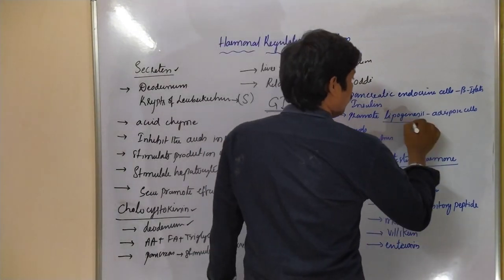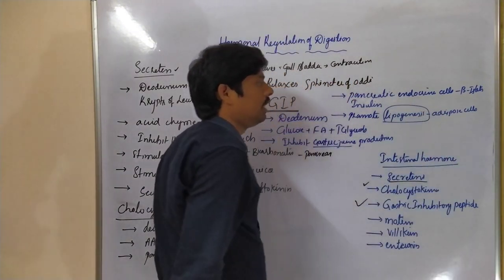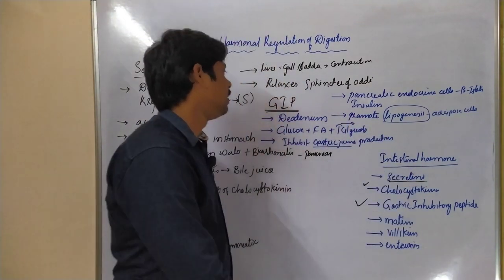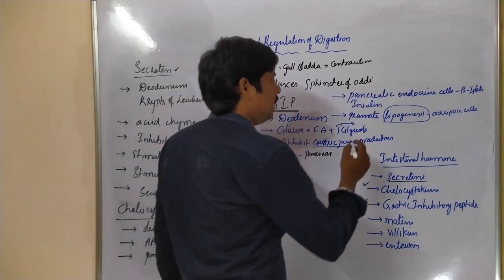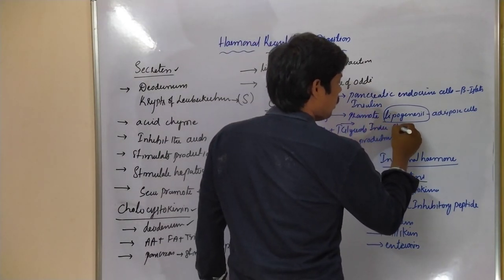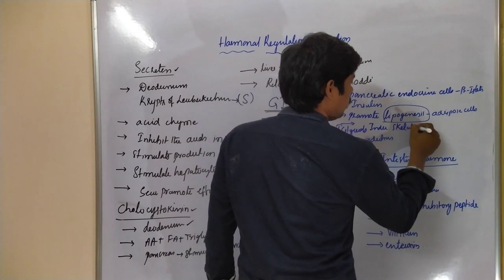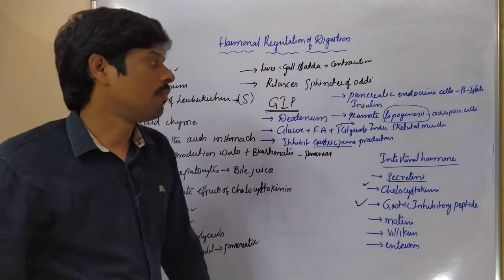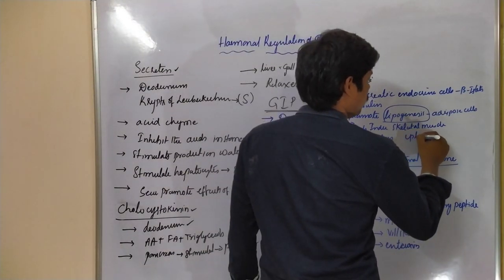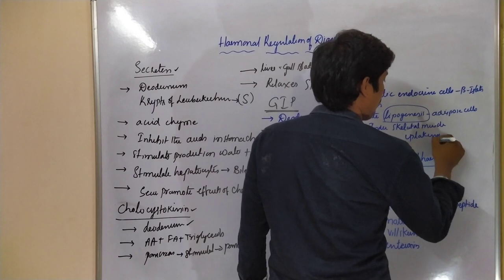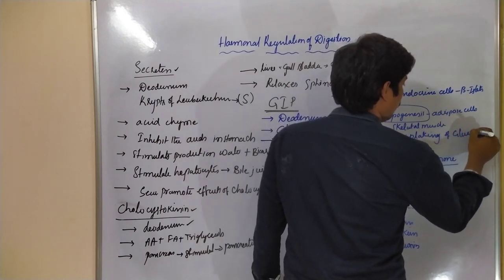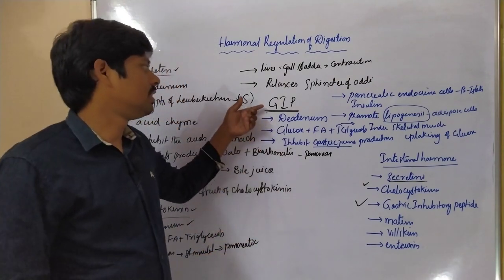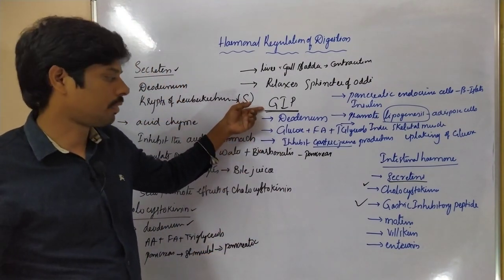GIP promotes formation of the lipid layer in the adipose tissue. Another function of GIP is that it induces skeletal muscle for the uptaking of glucose.